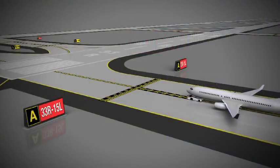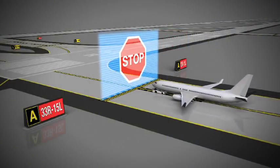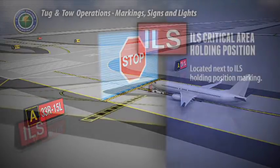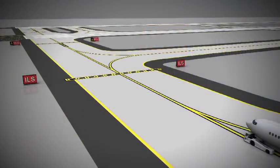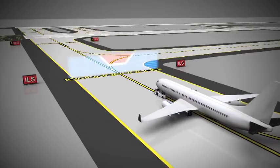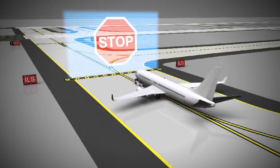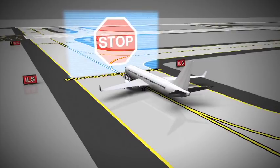If you approach this sign, stop and do not move beyond it until air traffic control clearance is granted. The ILS critical area holding position sign, along with the ILS holding position marker, is used for ILS critical areas. It indicates that aircraft and vehicles will hold at this sign until clearance is given by air traffic control when the ILS is in use. Taxiing beyond this point may interfere with the ILS signal to approaching aircraft.